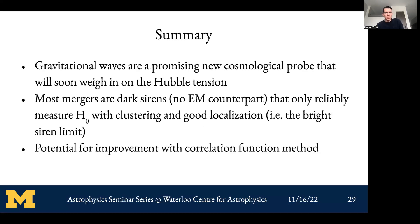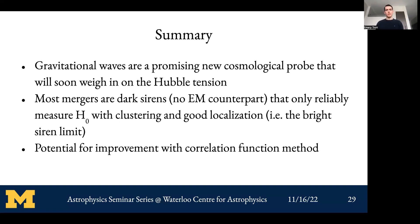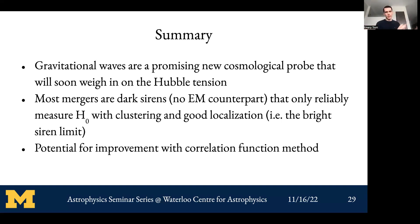To summarize: gravitational waves are a promising new probe of cosmology that we hope can soon weigh in on the Hubble tension. Most mergers are dark sirens without EM counterparts, so we need clustering information and good localization to approach the bright siren limit. The current Bayesian method has significant challenges, and a correlation function approach offers a potential improvement. Thank you.